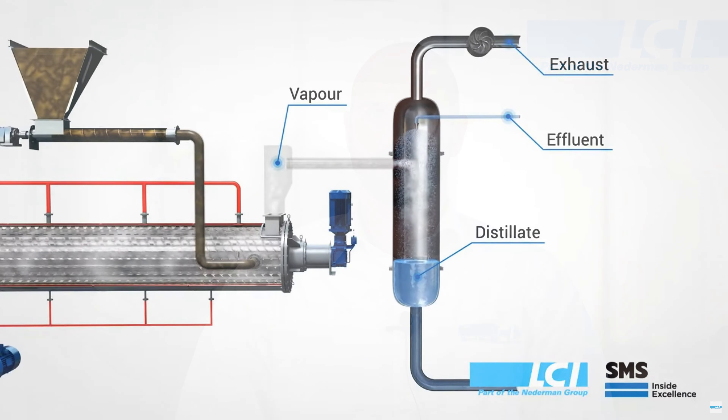Today we are going to continue our discussion on ancillary equipment around sewage sludge drying with the vapor treatment system. The first part of a vapor treatment system is the condenser system.